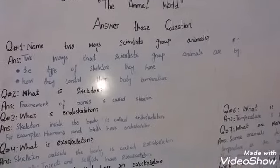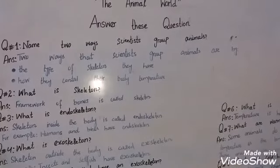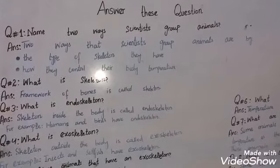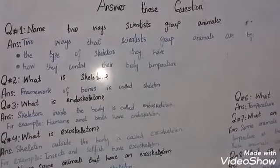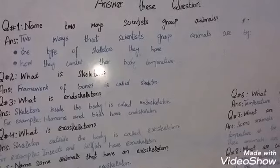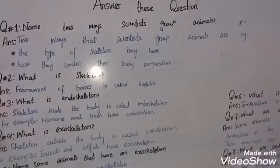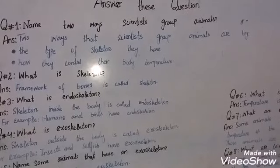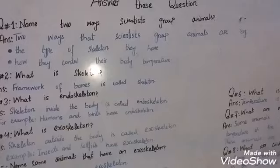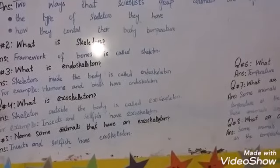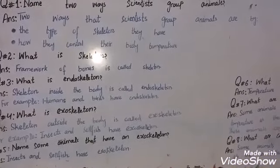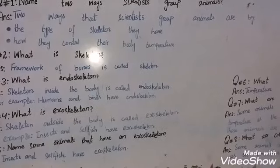Question number two: what is a skeleton? A framework of bones is called a skeleton. Question number three: what is an endoskeleton? A skeleton inside the body is called an endoskeleton. For example, humans and birds have an endoskeleton.